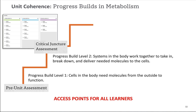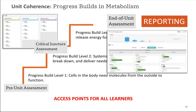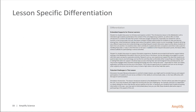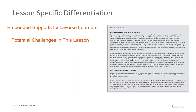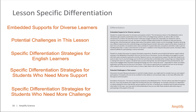Once we're secure that all students can move forward, we go into progress build level three where cells release energy to function. At the end of the unit there's a cumulative assessment allowing you to generate great reporting features showing growth over time and question analysis. The critical juncture assessment provides unit-level differentiation, but we also have lesson-specific differentiation included with every single lesson. These include embedded supports for diverse learners, strategies for English learners, strategies for students who need more support, and strategies for students who need more challenge.